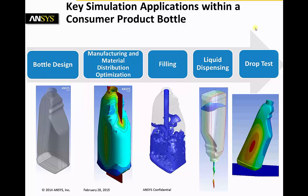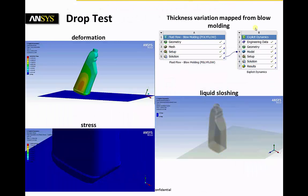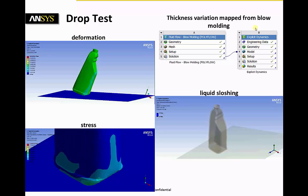Last but not least, we will be looking at the drop test of the partially filled bottle. The drop test behavior of the bottle is affected by the liquid level inside the bottle, its material, and its thickness distribution, which can easily be mapped from the blow molding process simulated earlier.